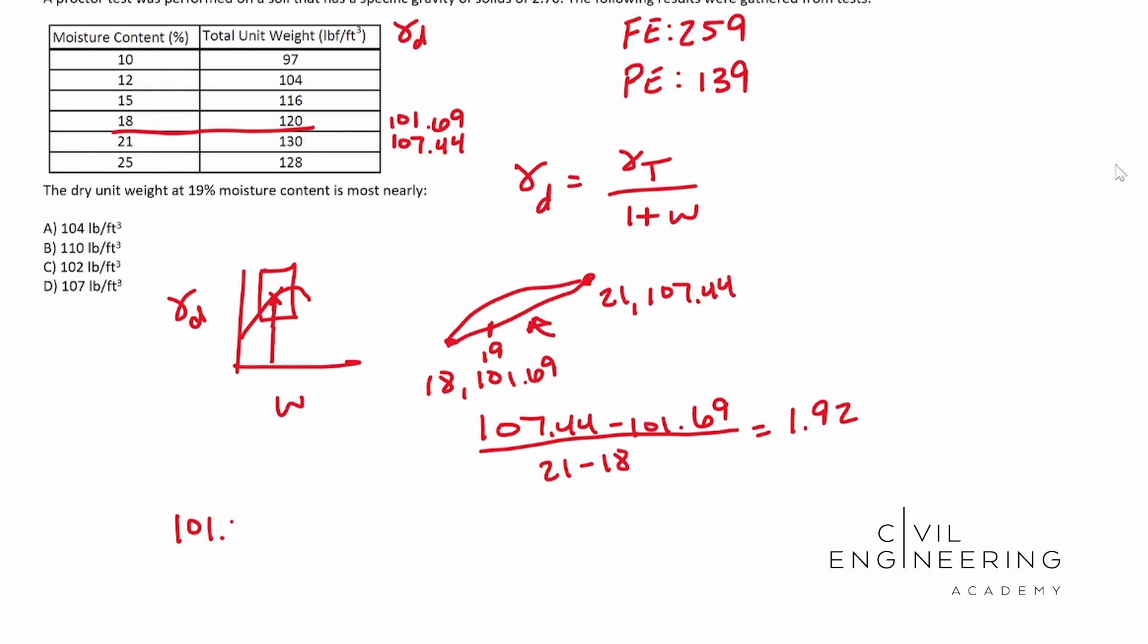Here's what our equation looks like. 101.69 plus one, because remember we're moving from 18 to 19. So one times 1.92. All I did was I created a slope formula. That's really it. And this guy ends up being 103.61. And this is pounds per cubic foot. And our answer bank, let's see, it looks like it's A. So I hope this video helped and we'll catch you next time.